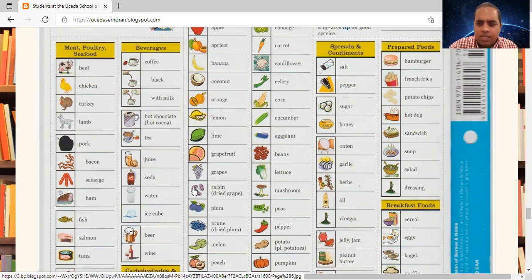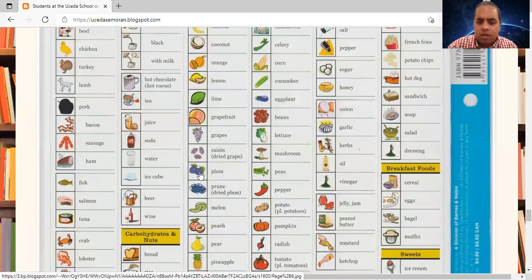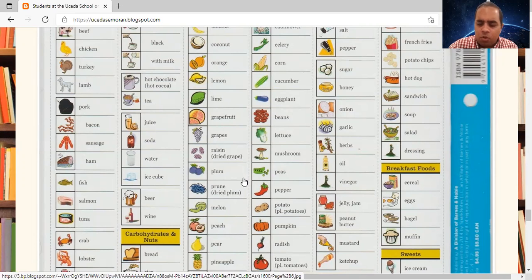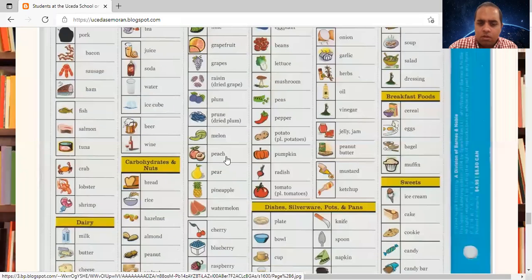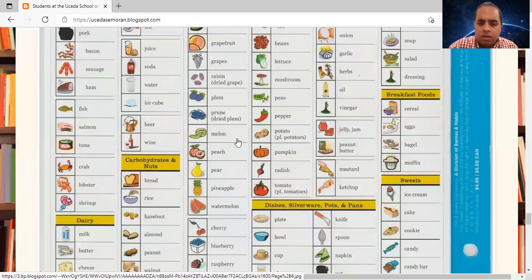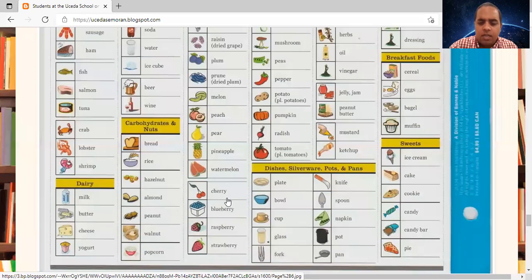In my opinion, raisin is more commonly said in America. Plum. Prune. Dried plum. Prune is the same as dried plum. In my opinion, prune is more commonly said. Melon. Peach. Pear. Pineapple. Watermelon. Cherry. Blueberry. Raspberry. Strawberry.